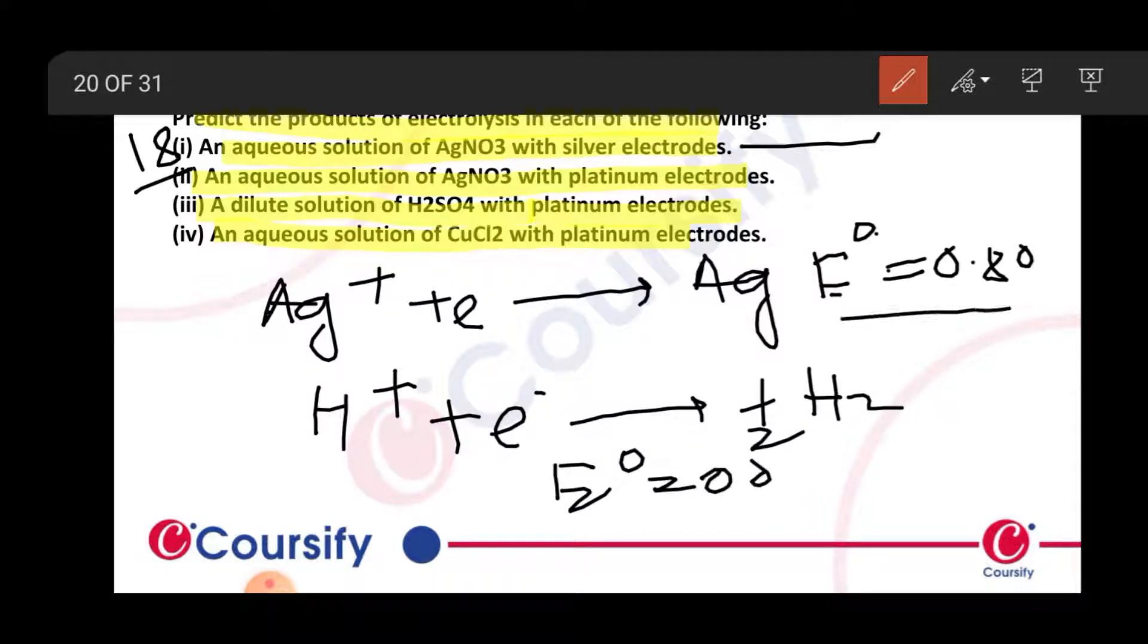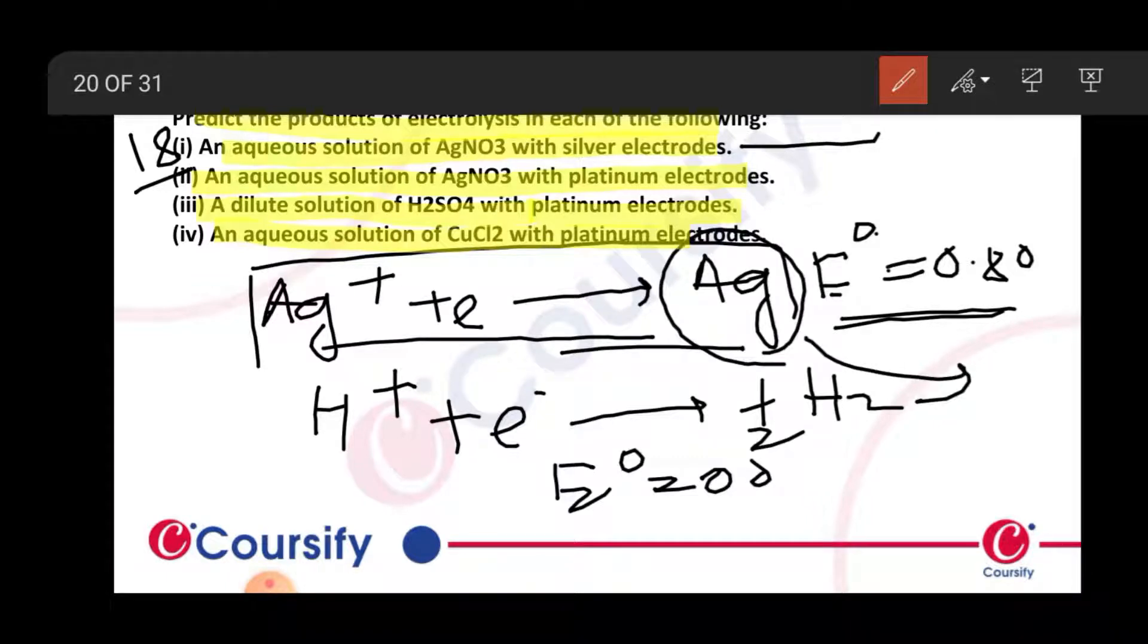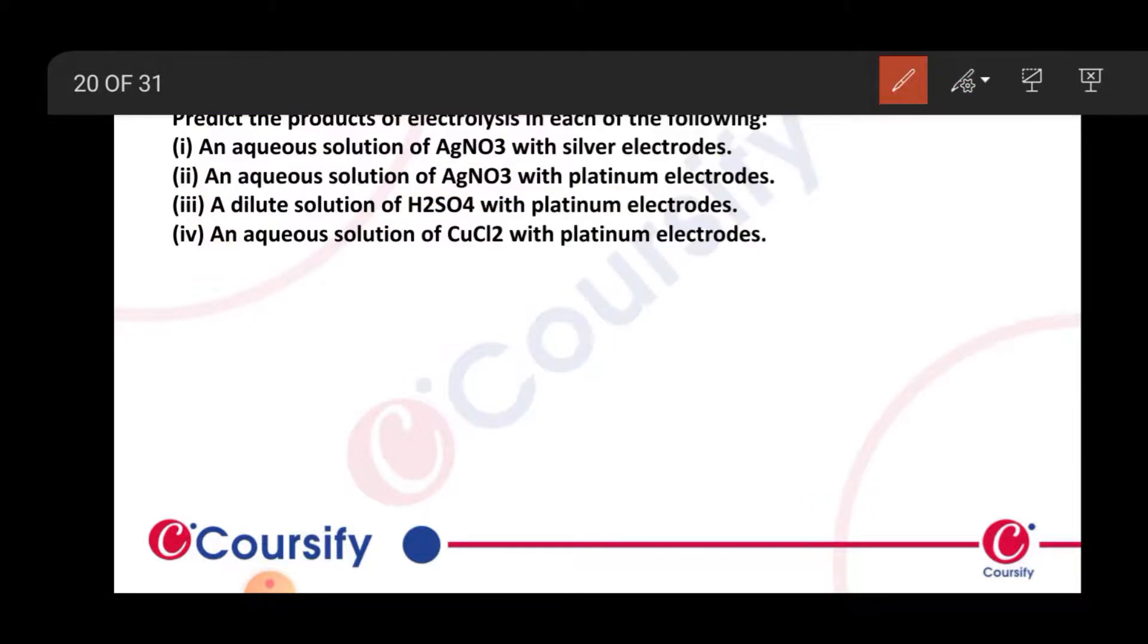Since the higher value undergoes reduction, this reaction will have easier reduction at the cathode. Therefore, the cathode reaction will be silver deposition - the first reaction where silver deposits.